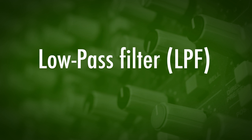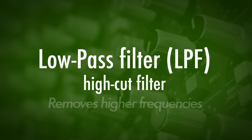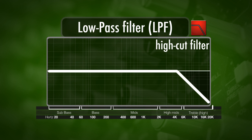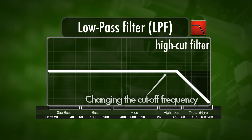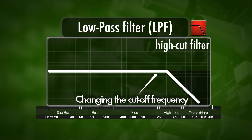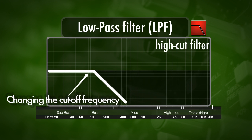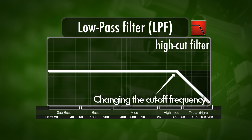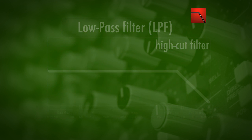The next filter I want to take a look at is a low pass or high cut filter, which is exactly the opposite of what we just heard. A low pass filter lets through the low frequencies of a signal by removing or cutting the high frequencies. You could really hear that the high frequencies were being cut away and then we just had the low part of the signal.